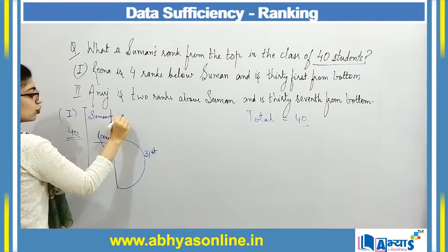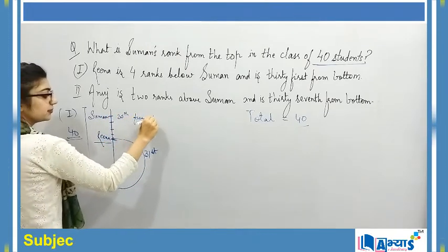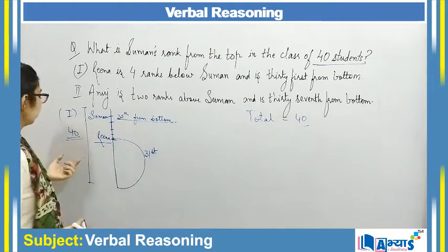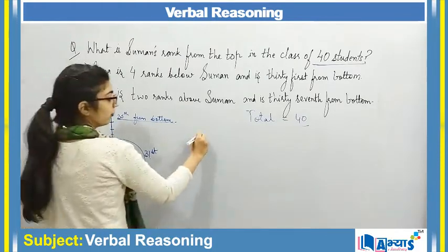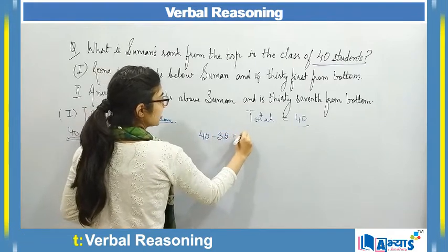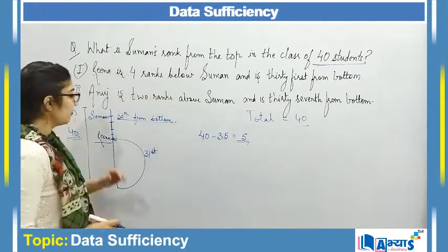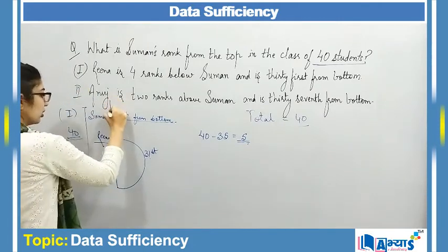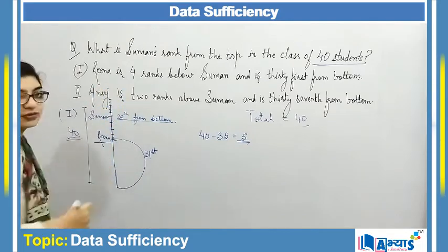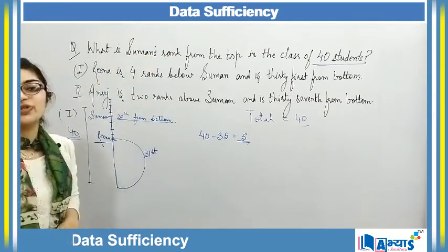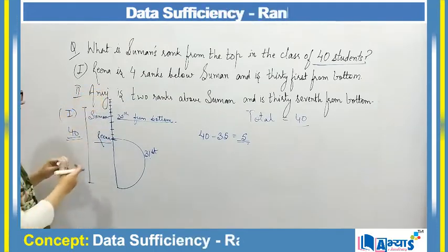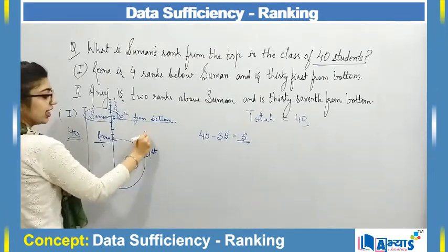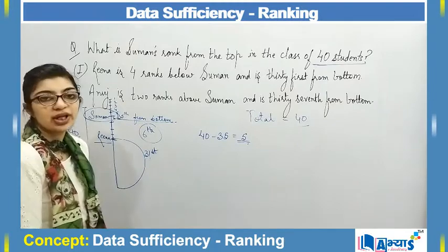Reena is 31st from the bottom, so going up 4 ranks: 32nd, 33rd, 34th, 35th — Suman's rank from the bottom is 35th. Total students are 40, so 40 minus 35 gives 5 students still above Suman. Counting from the top: 1, 2, 3, 4, 5, 6 — Suman's rank from the top is 6th. Drawing the diagram makes it very easy. Statement 1 alone is sufficient to answer this question.